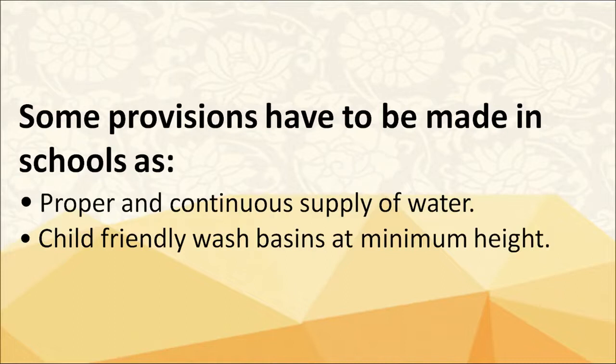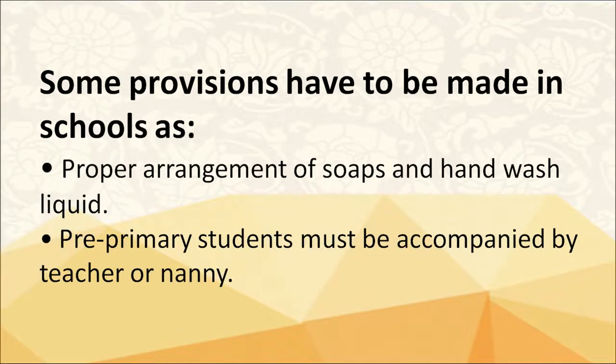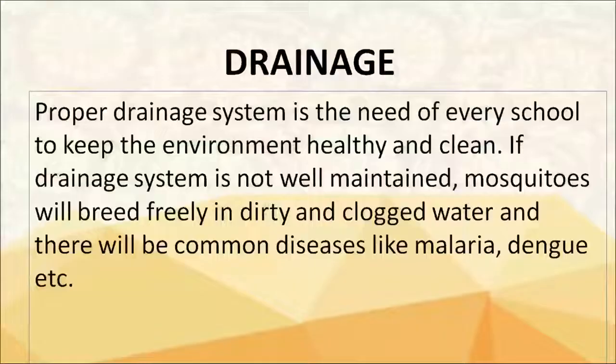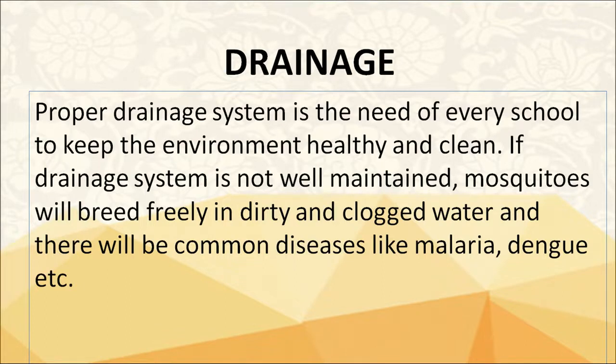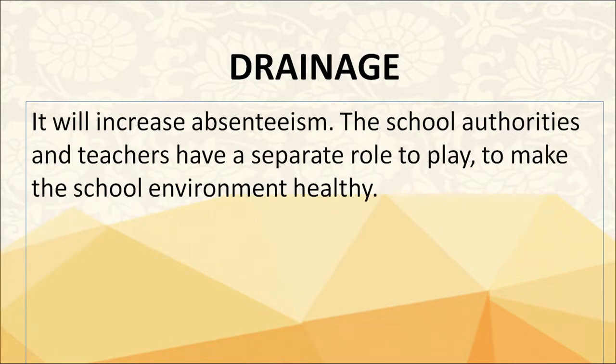Some provisions to be made in schools include a proper and continuous supply of water, child-friendly wash basins at minimum height, and proper arrangement of soaps and hand wash liquid. Pre-primary students must be accompanied by teachers when they visit washrooms. A proper drainage system is needed in every school to keep the environment healthy and clean. If the drainage system is not well maintained, mosquitoes will breed in dirty and clogged water, causing diseases like malaria and dengue, which will increase absenteeism.